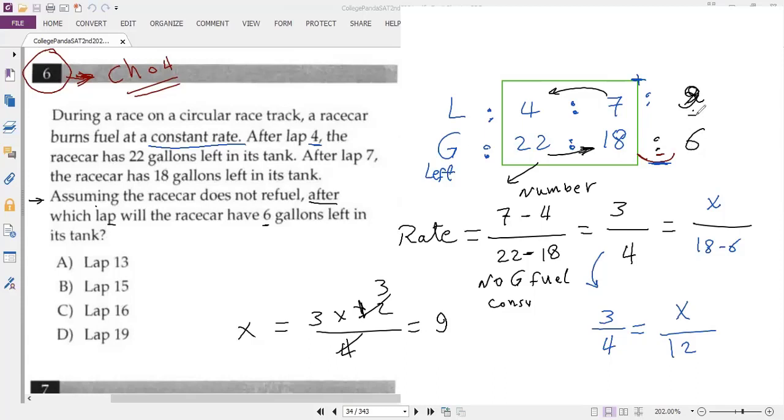So x is 9, the number of laps consumed here is 9. We can add here because we already calculated how many. So 7 plus 9, because he already covered 9 laps with 6 gallons, so we add 9 to the last number of laps. Should be 16 laps. Answer is C.